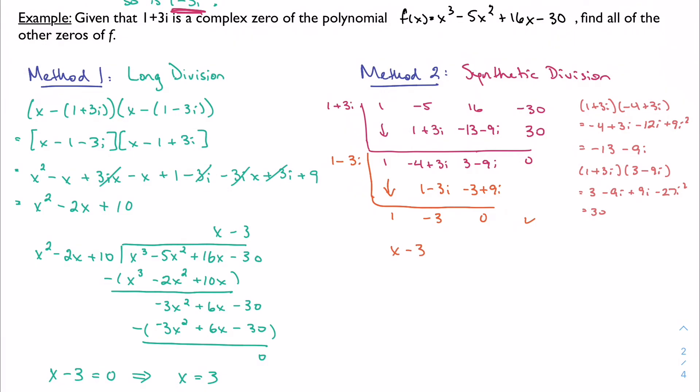So my quotient again is x minus 3, which tells me that's also a factor. It tells me that x equals 3 is a zero. And my zeros are 1 plus or minus 3i and 3.